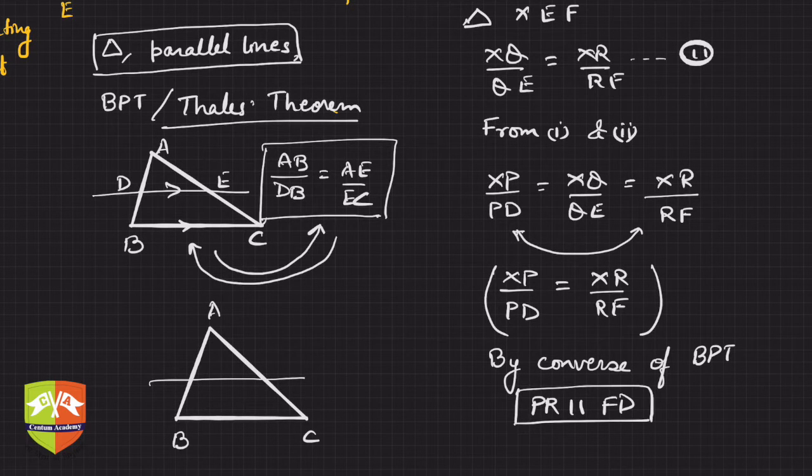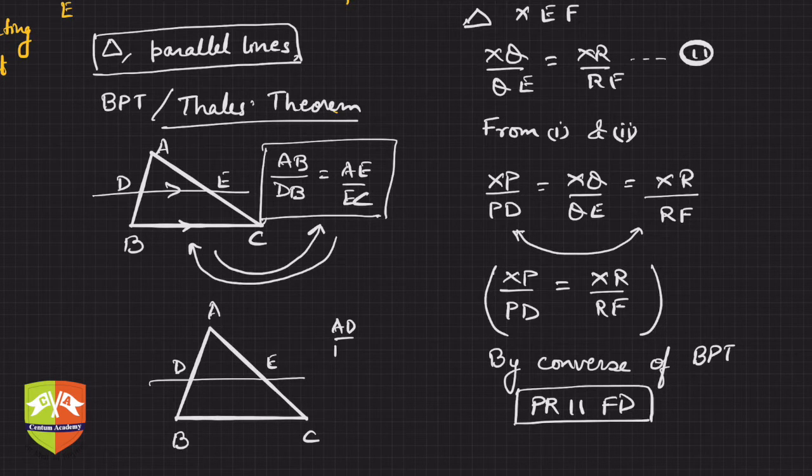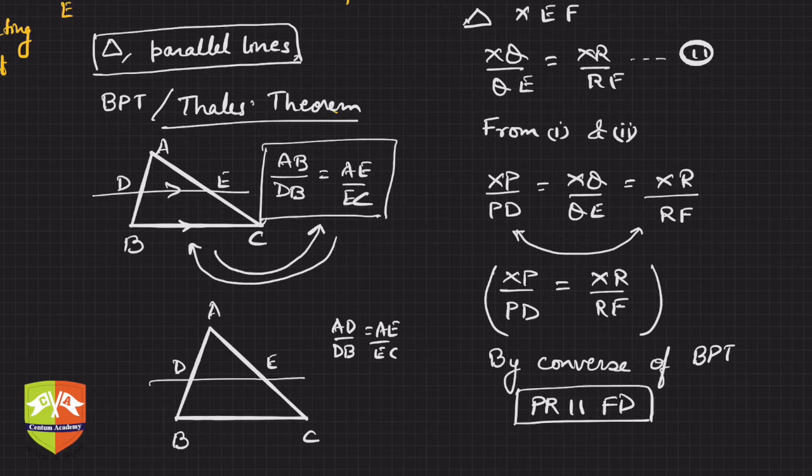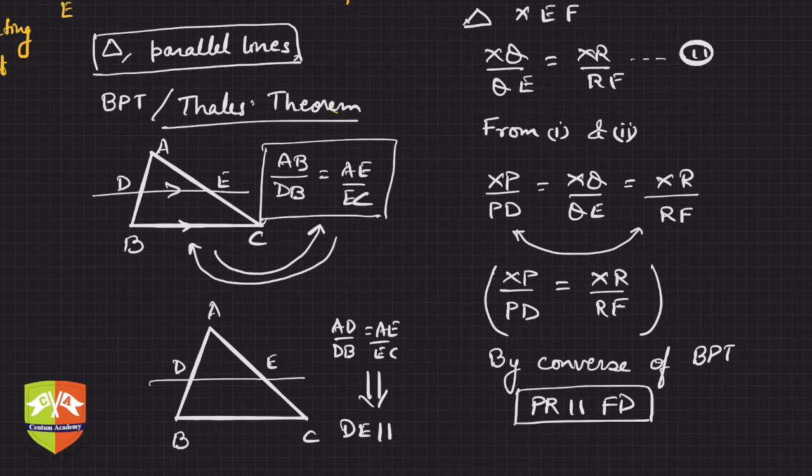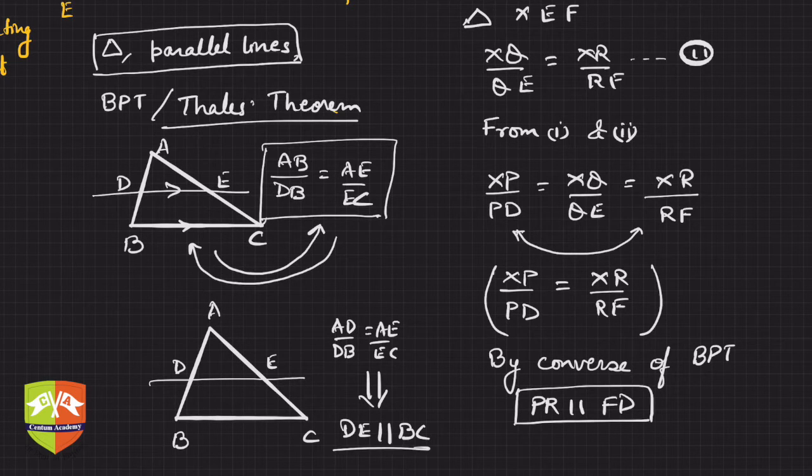And it is given that AD by DB is equal to AE by EC, then this results - this means that DE is parallel to BC. This was converse of Thales' theorem.